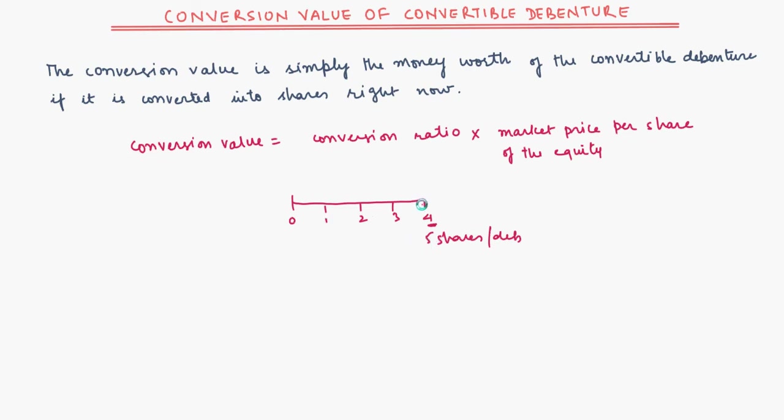Now whatever is the market price of the share at the end of 4 years will be basically your worth of these 5 shares. So let's say you invested 100 rupees for 1 debenture. At the end of 4 years, these 100 rupees will become 5 shares. Now if each share at the time of conversion is rupees 25 each, then your conversion value is 5 into 25, which equals rupees 125.